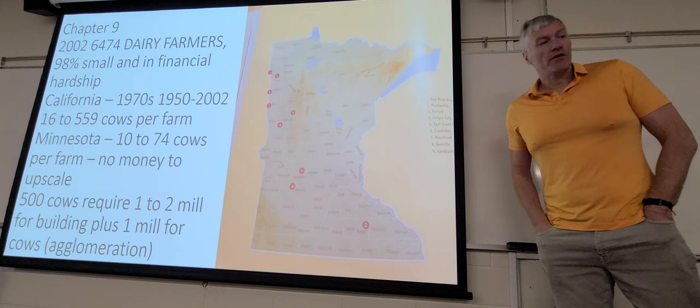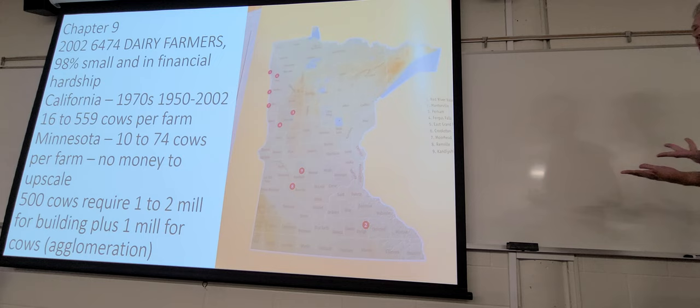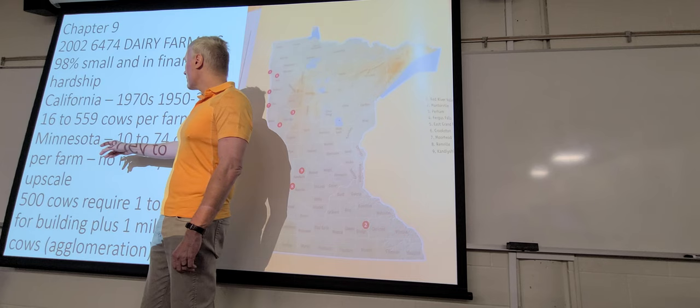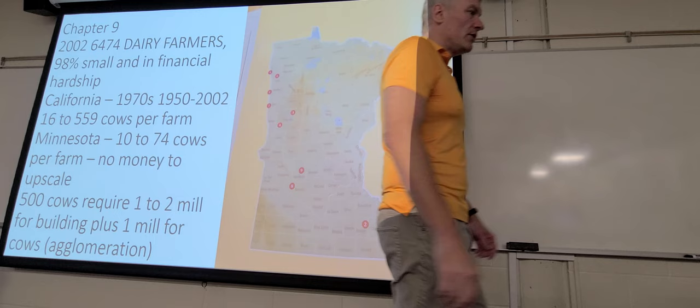To look at the example, dairy farms, technically 98 percent are in some type of financial hardship. A lot of this according to our book is because dairy farms aren't able to upscale the way they are in California. From 1950 to 2002, California went from 16 to 559 cows per farm, Minnesota went from 10 to 74 per farm.